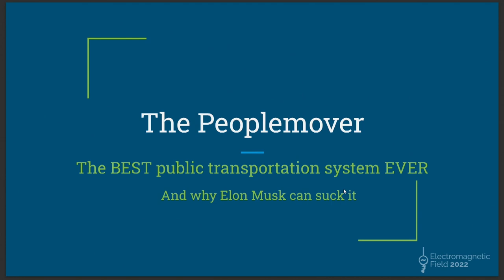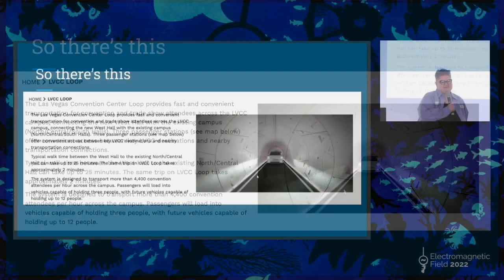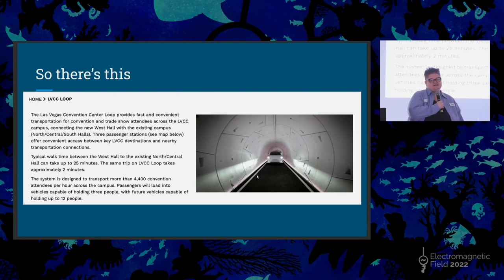We're actually not going to talk that much about Elon Musk because he sucks. My brother lives in Las Vegas, and in Las Vegas you now have the Las Vegas Convention Center loop, which is supposed to be this amazing public transportation system of the future where you can go from one end of the convention center to the other in two minutes. You know what it is? It's a bunch of Teslas in a tunnel.